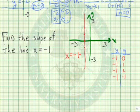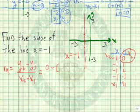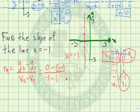Once again, to find the slope, we use our slope formula: m equals (y2 minus y1) divided by (x2 minus x1). Let's call this point (x1, y1) and this point (x2, y2). So we take y2, which is 0, minus y1, which is negative 1, divided by x2, which is negative 1, minus x1, which is negative 1.